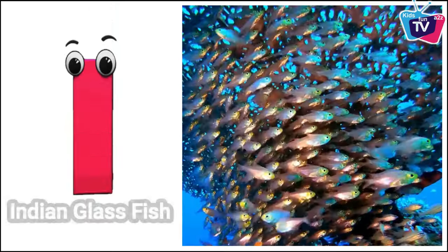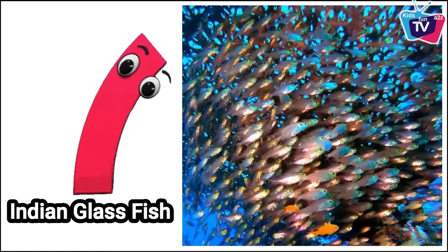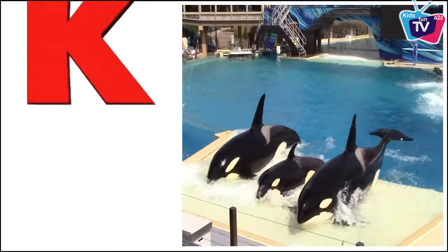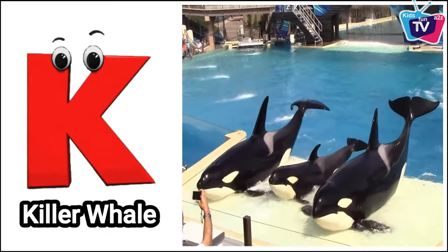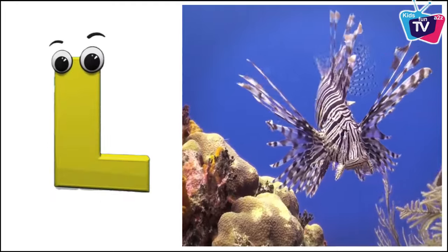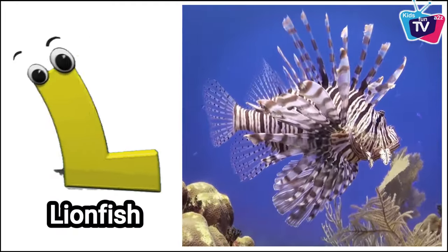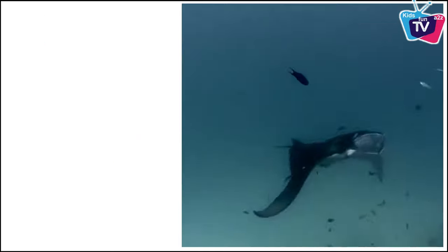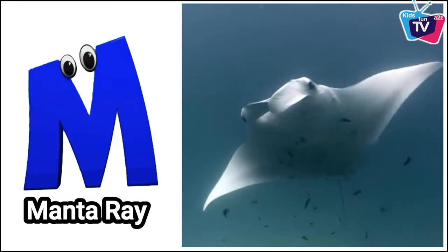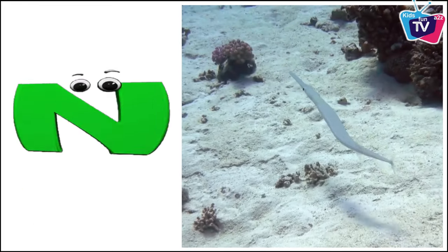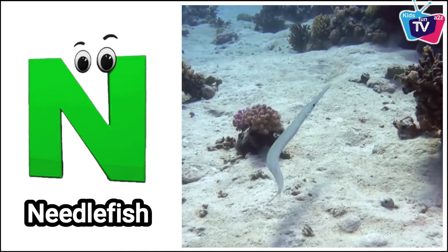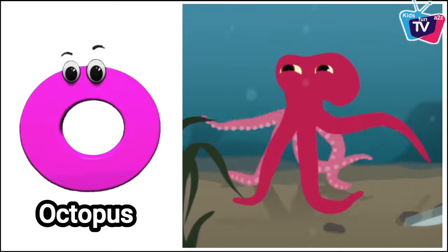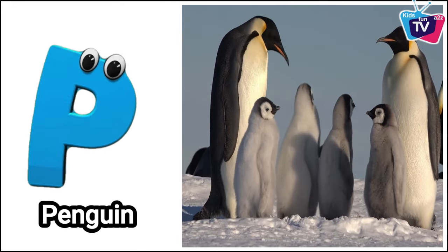I is for Indian glass fish. J is for jellyfish. K is for killer whale. L is for lionfish. M is for manta ray. N is for needlefish. O is for octopus. P is for penguin.